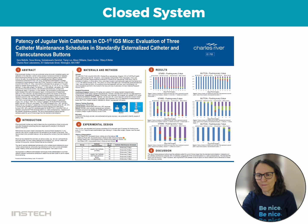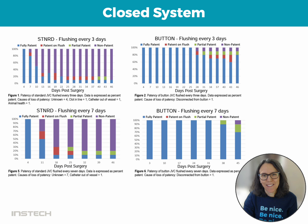Now let's take a look at a study done by Charles River on CD1 mice. The study evaluated three catheter maintenance schedules in exteriorized catheters and transcutaneous buttons, which are the VABs. The three maintenance schedules were 3 days, 5 days, and 7 days. Let's take a closer look at four of the graphs from the study.